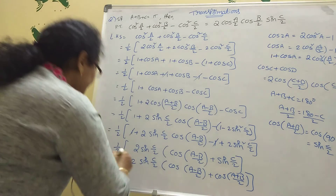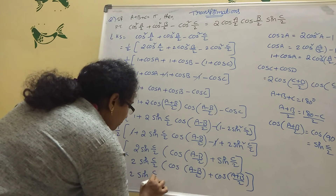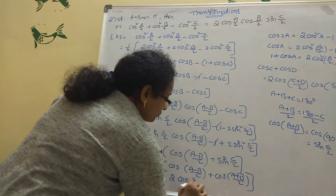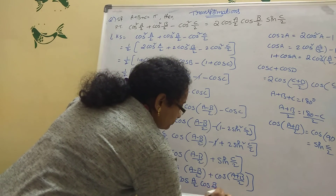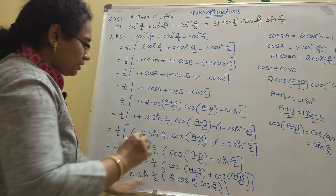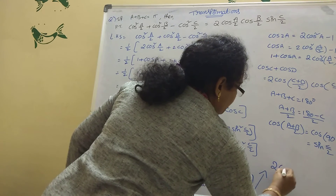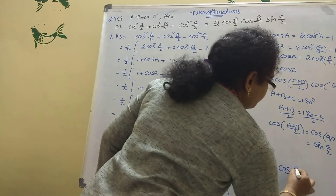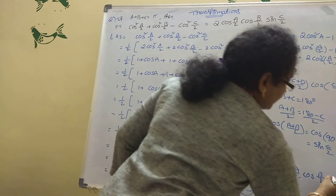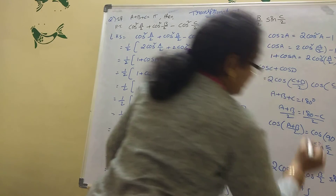The 2 cancels, and the final answer is 2 cos(A/2) cos(B/2) sin(C/2). That is RHS. So LHS equals RHS, which is the answer.